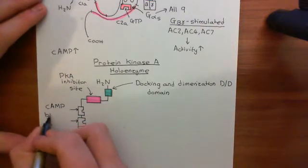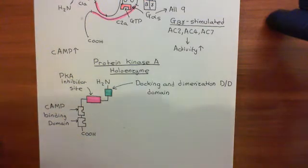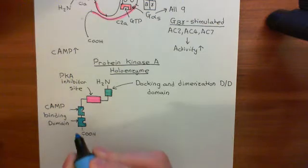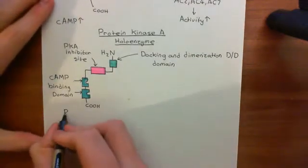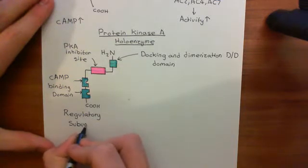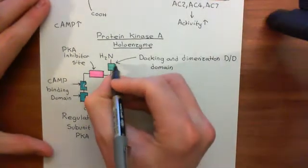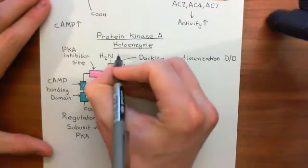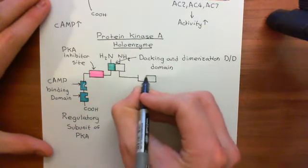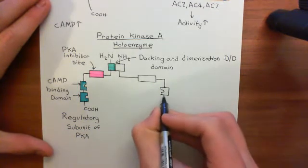Each regulatory subunit of protein kinase A has two cyclic AMP binding domains, so it is capable of binding two cyclic AMP molecules. To form a protein kinase A holoenzyme, two regulatory subunits are dimerized together through their docking and dimerization domains, producing what is called a regulatory subunit dimer.